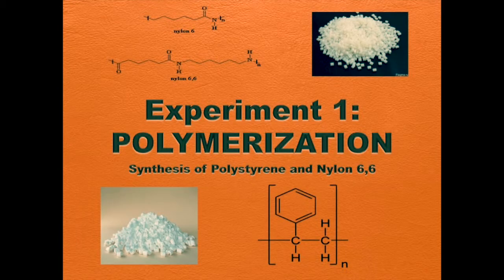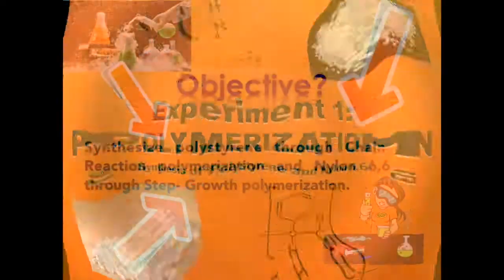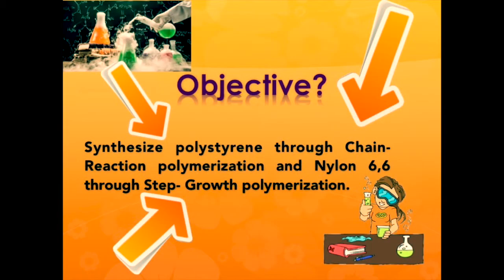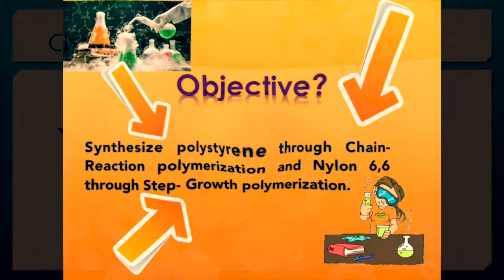Experiment 1: Polymerization — Synthesis of Polystyrene and Nylon-6-6. The objective for this experiment is to synthesize polystyrene through chain reaction polymerization and Nylon-6-6 through step growth polymerization.